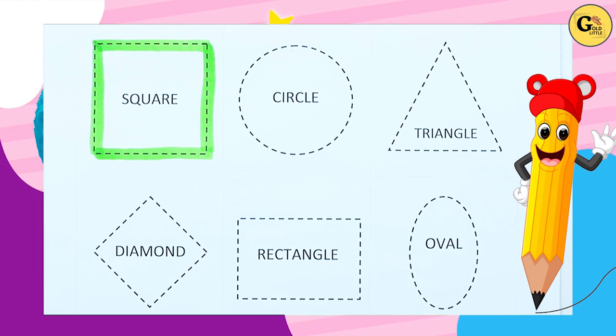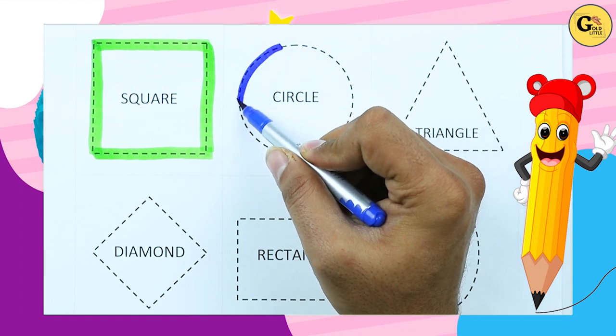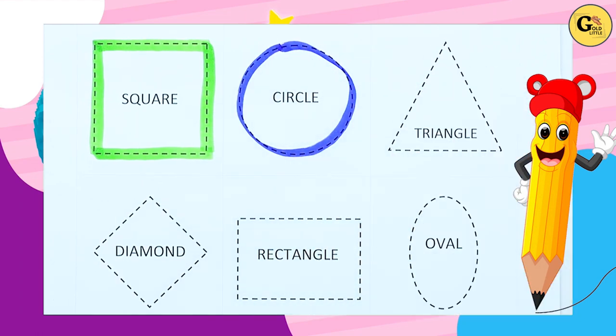It's called a square with green color. Circle - round, round, round, round. It's a circle with blue color.